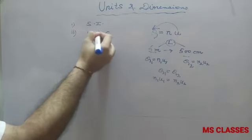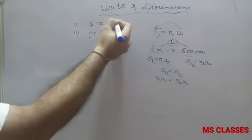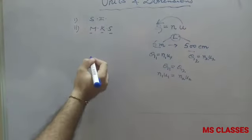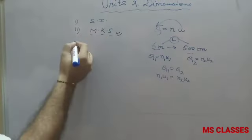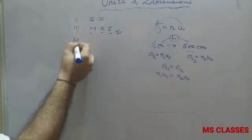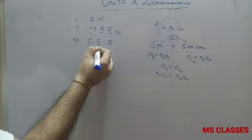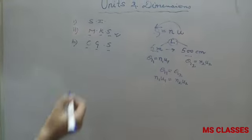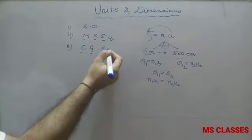Second is MKS, which is meter-kilogram-second. If you convert Newton in MKS, it's kg·m/s². Third is CGS, which is centimeter-gram-second. If I convert Newton in CGS, that will be gram·cm/s².